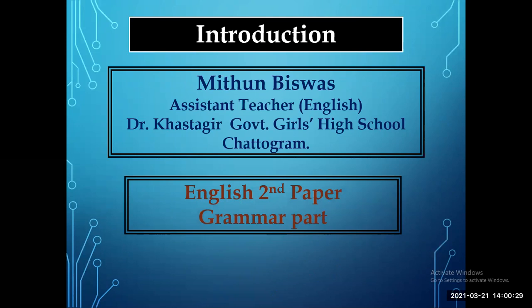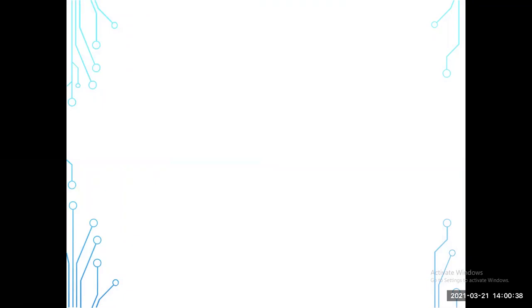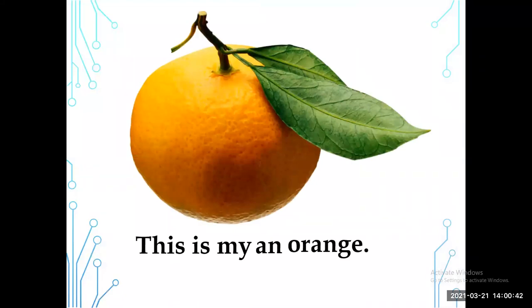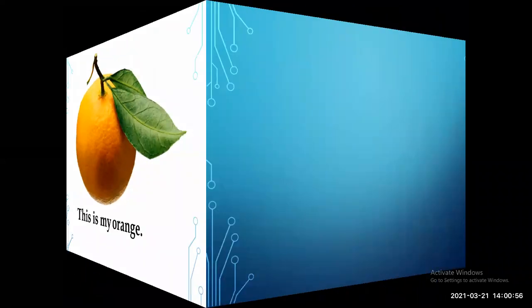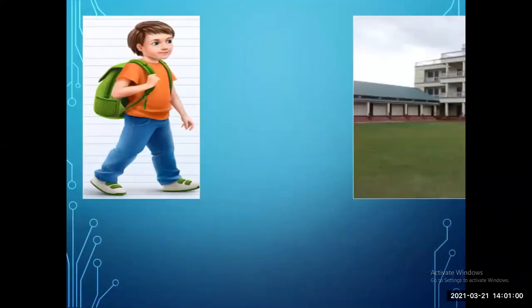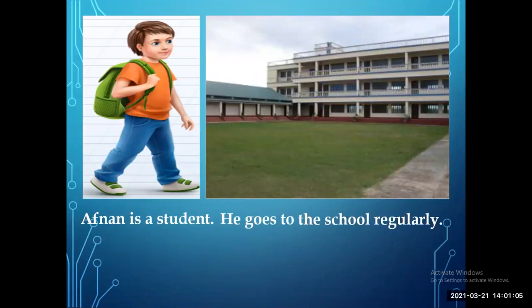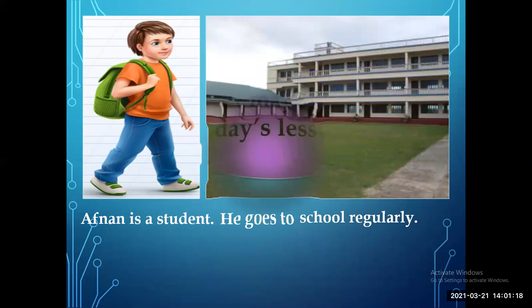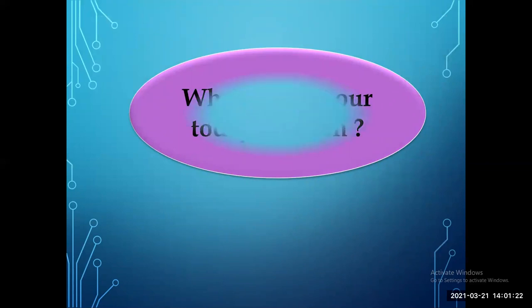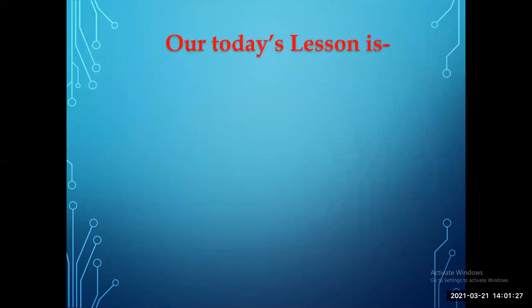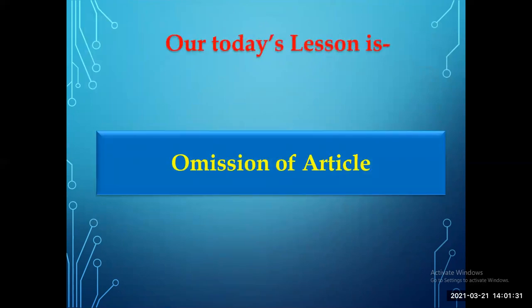First, you have to guess the subject topic of today's class. Look at the screen and try to guess our today's subject topic. For example: 'This is my an orange' — is this correct or incorrect? This is an incorrect sentence. The correct one is 'This is my orange.' Another example: 'He goes to the school regularly' — the correct one is 'He goes to school regularly.' So our today's lesson is on omission of article.